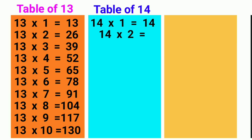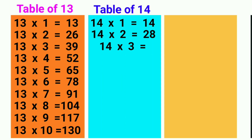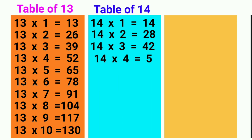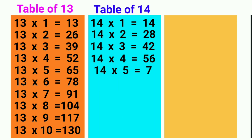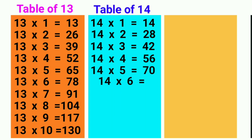14 ones are 14, 14 twos are 28, 14 threes are 42, 14 fours are 56, 14 fives are 70, 14 sixes are 84,